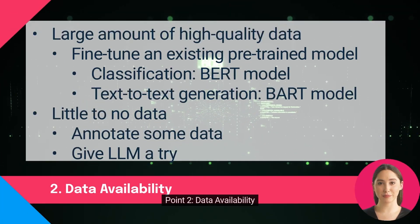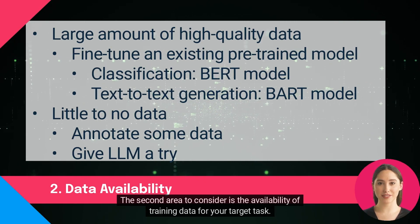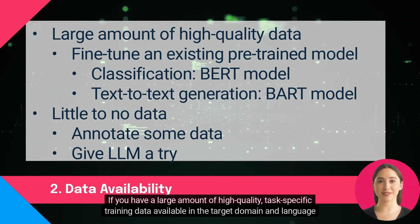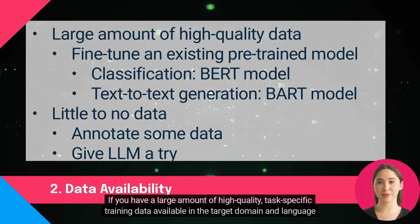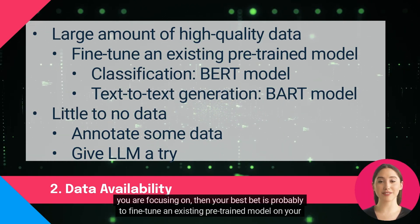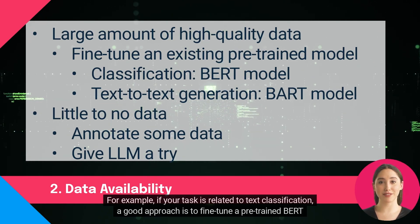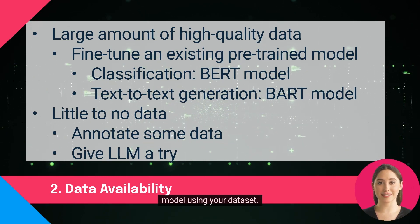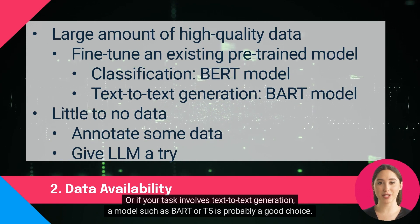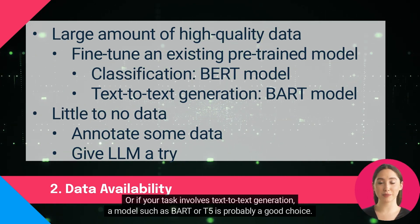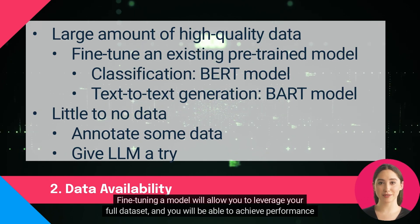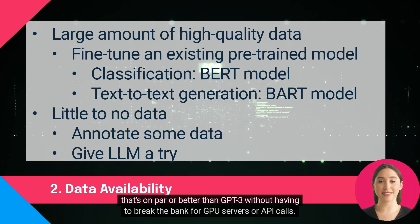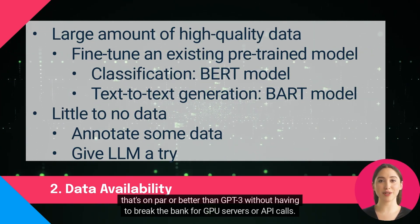Point 2: Data Availability. The second area to consider is the availability of training data for your target task. If you have a large amount of high-quality, task-specific training data available in the target domain and language you are focusing on, then your best bet is probably to fine-tune an existing pre-trained model on your data. For example, if your task is related to text classification, a good approach is to fine-tune a pre-trained BERT model using your dataset. Or, if your task involves text-to-text generation, a model such as BART or T5 is probably a good choice. Fine-tuning a model will allow you to leverage your full dataset, and you'll be able to achieve performance on par or better than GPT-3 without having to break the bank for GPU servers or API calls.